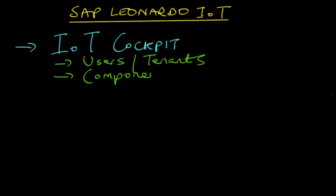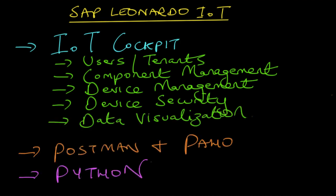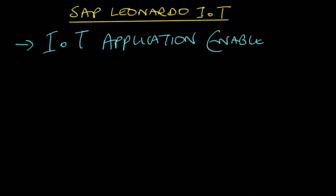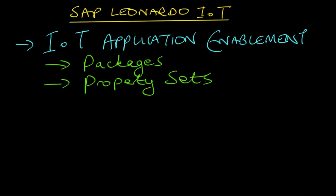In the previous video series we looked at the SAP Leonardo IoT service and some of these concepts. So what are the steps we're going to demonstrate to show how IoT application enablement can be used? The first thing we need to do is build a package, which is a container that holds metadata objects such as thing types and property sets. Within your package you include your property set, where you decide on the various attributes you want to include about your things.